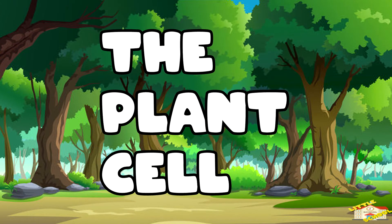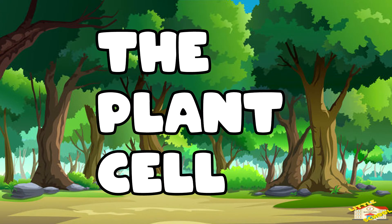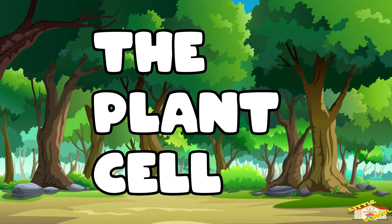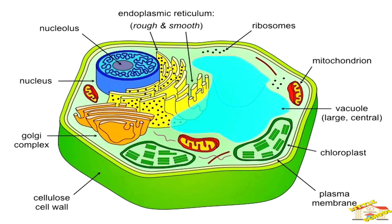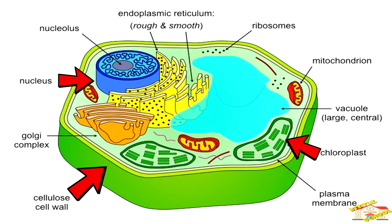Now let's take a closer look at the plant cell. Plant cells are composed of rigid cell walls made of cellulose, chloroplasts, a nucleus, and large vacuoles filled with water.